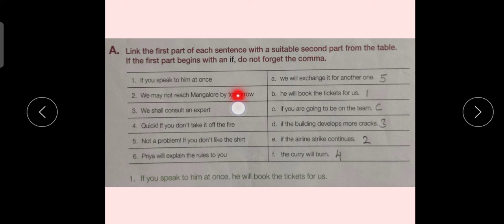Sentence number 2. We may not reach Mangalore by tomorrow. We will match this part with option E in section number 2. If the airline strikes, continue. Here, we don't have to put a comma before joining these two parts. Because the first part of the sentence was not beginning with if. Sentence number 3. We shall consult an expert. We will match this part with option D in second section. If the building develops more cracks.